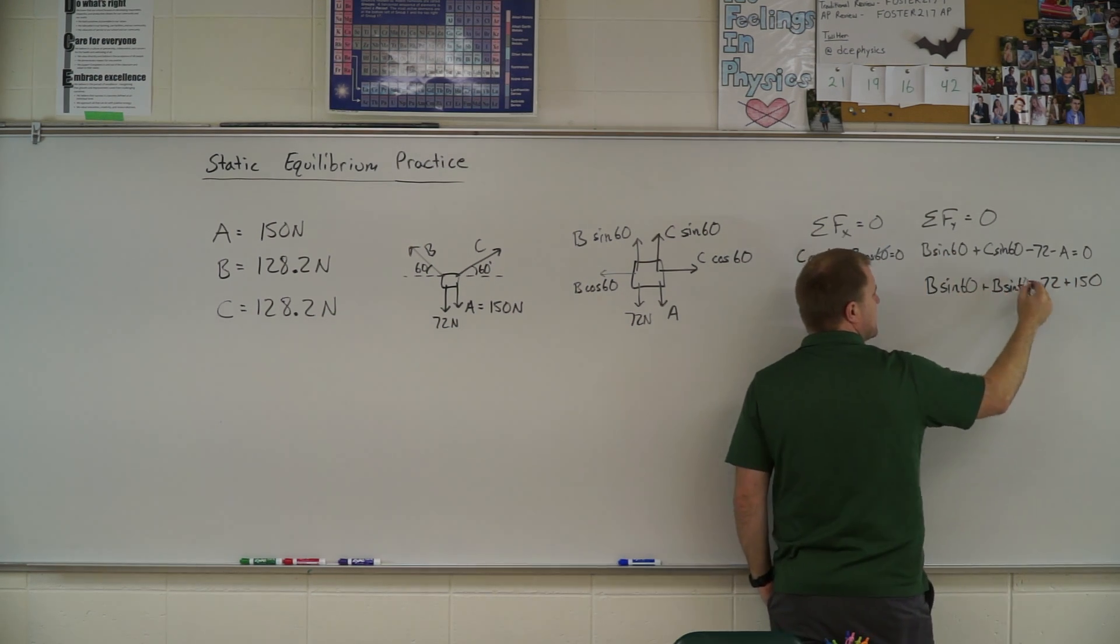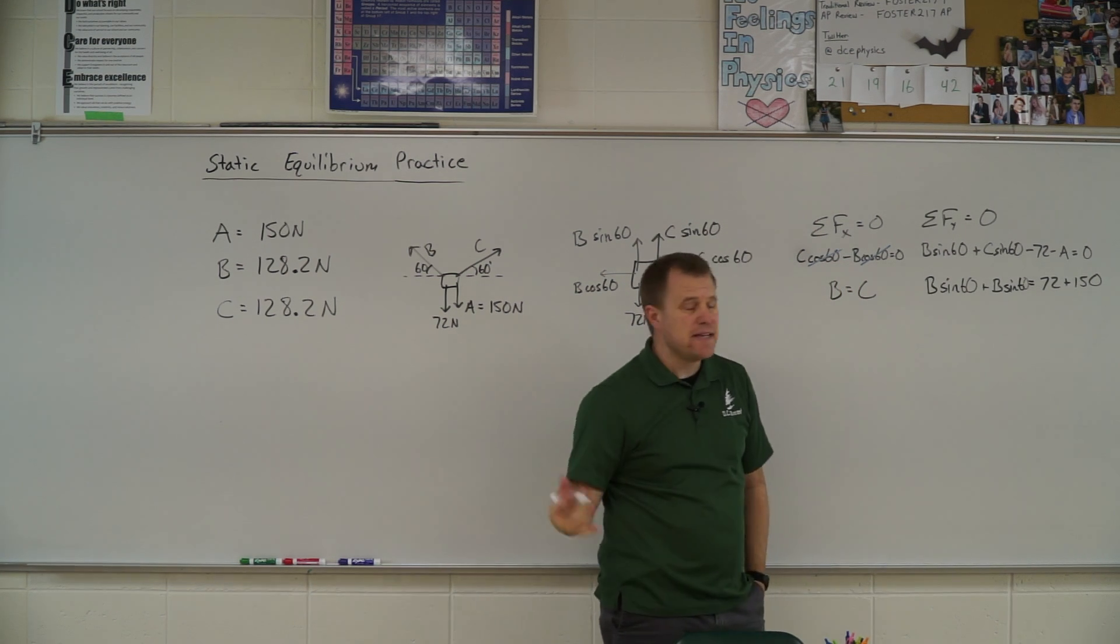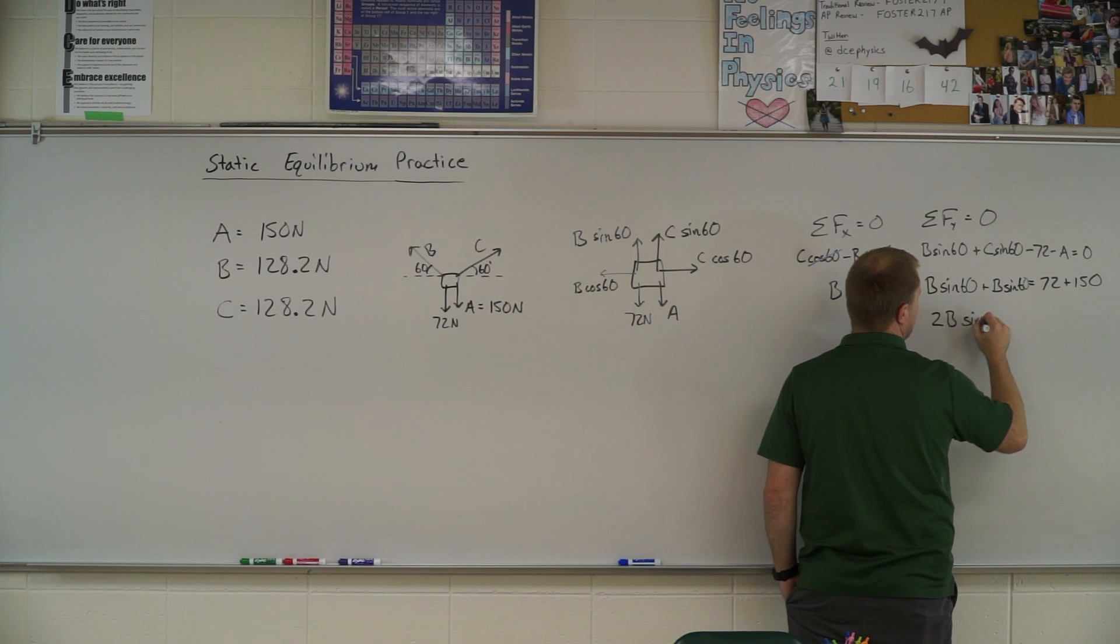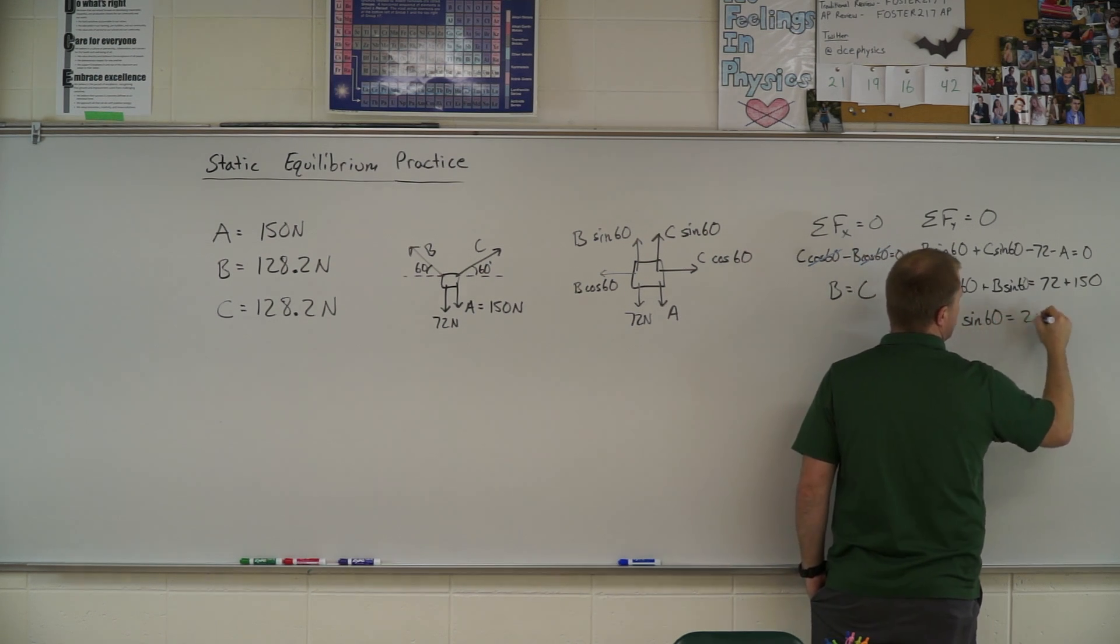So I have B sine 60, oops missed a zero there. B sine 60 plus B sine 60 gives me, you guessed it, 2B sine 60 equals 222.